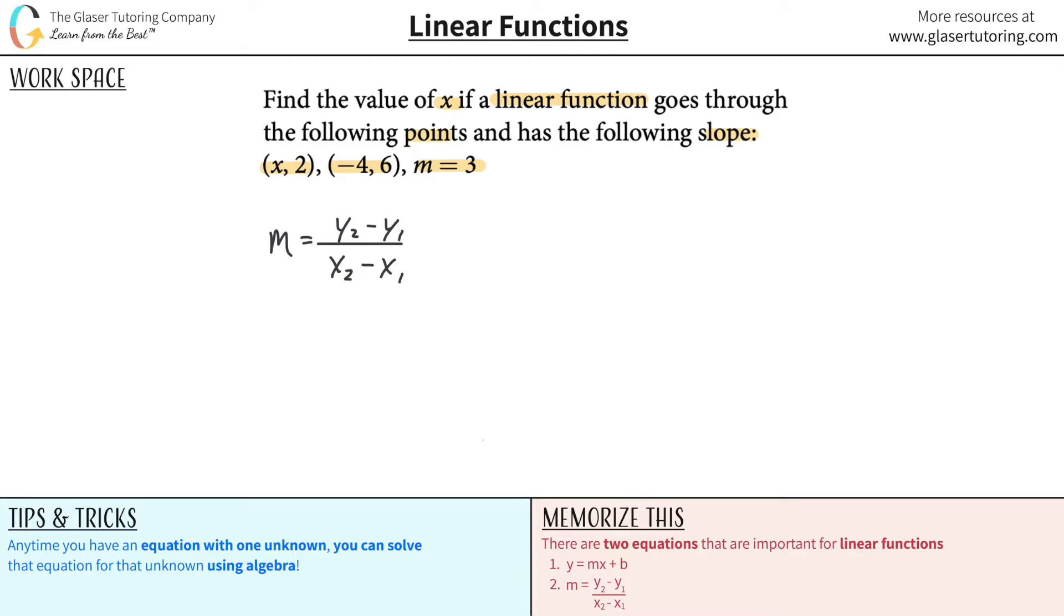So when I'm given something like this and I know I have two points and they give me the slope, what automatically pops into my mind is my slope equation. Why? Well, because the slope equation tells me that the slope will be equal to the change in two points, basically. These are both two points. So I'm going to start plugging in this stuff into this equation, okay?